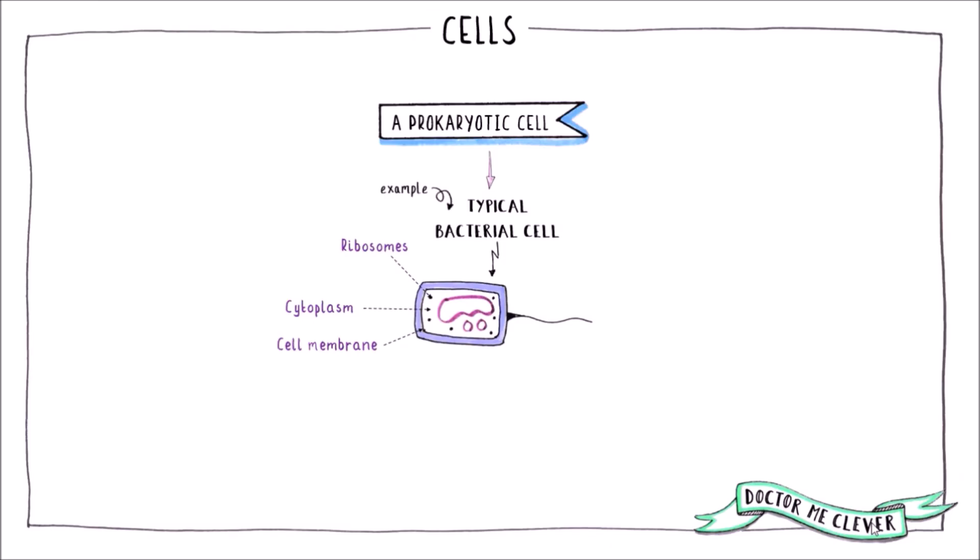There are several subcellular structures that are unique to bacterial cells. The circular chromosomal DNA that is free in the cytoplasm. This DNA contains the bulk of the genetic information that the cell needs to control its activities.